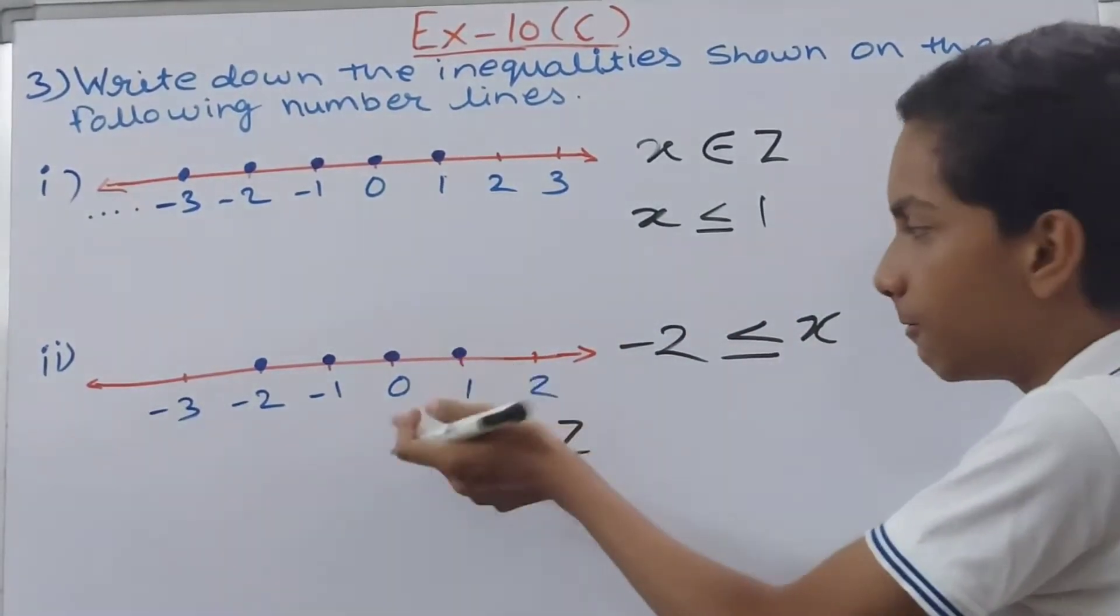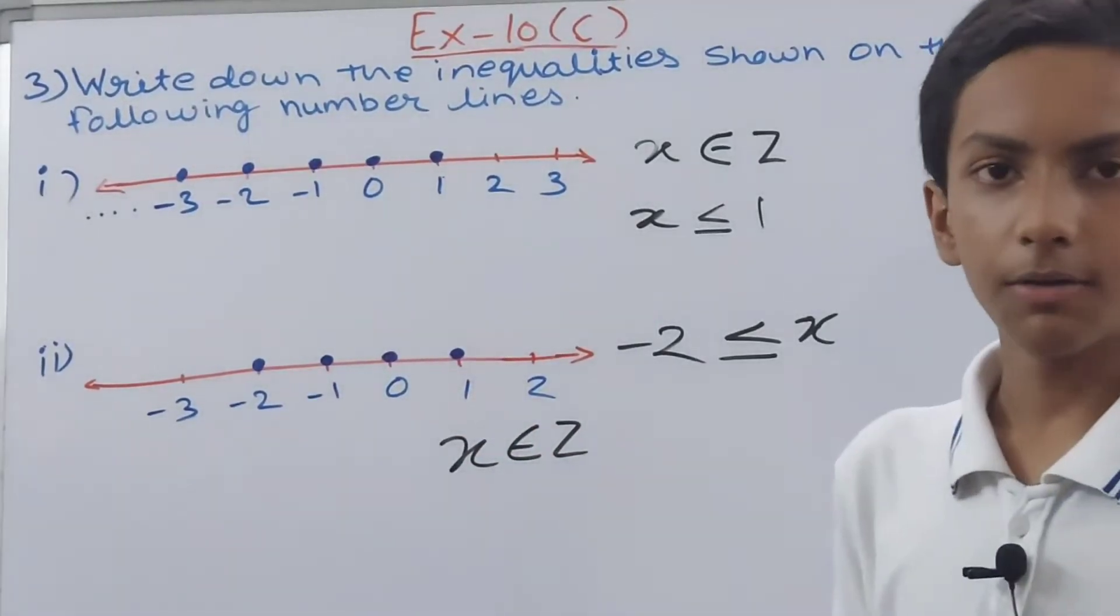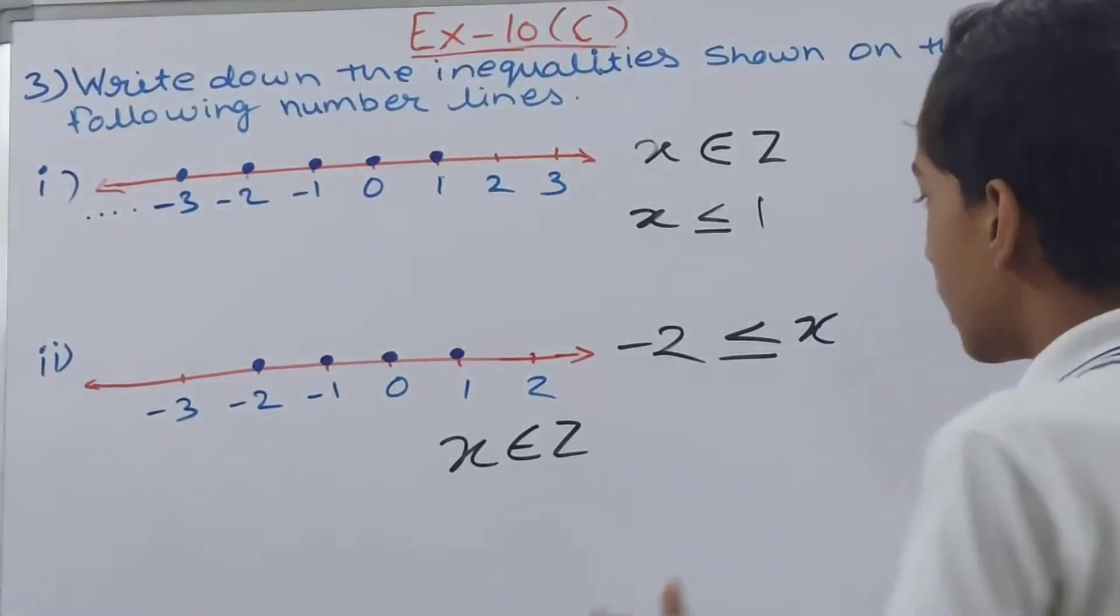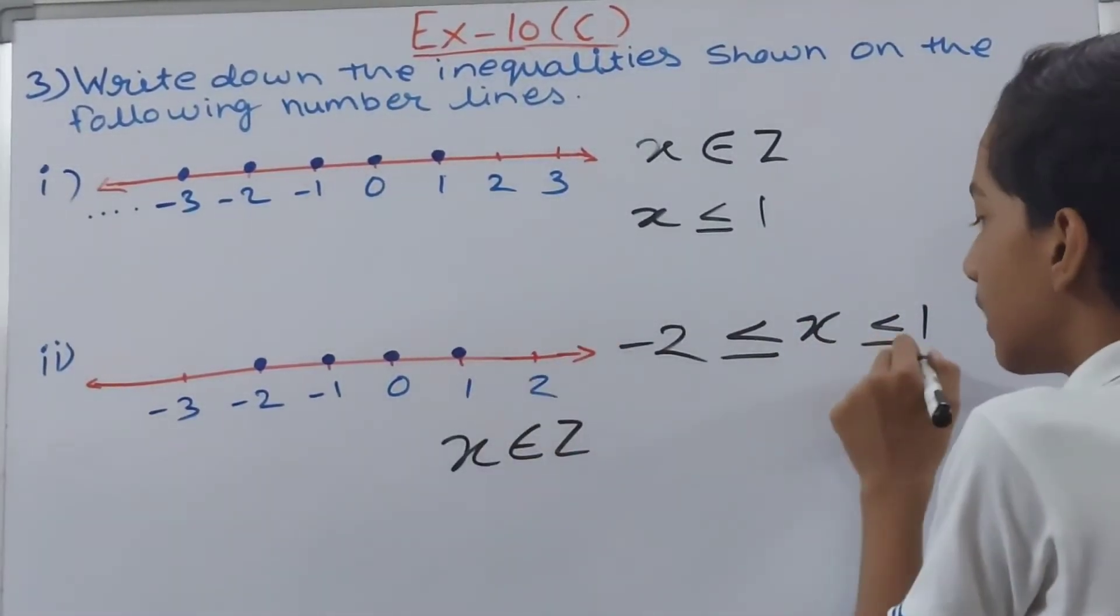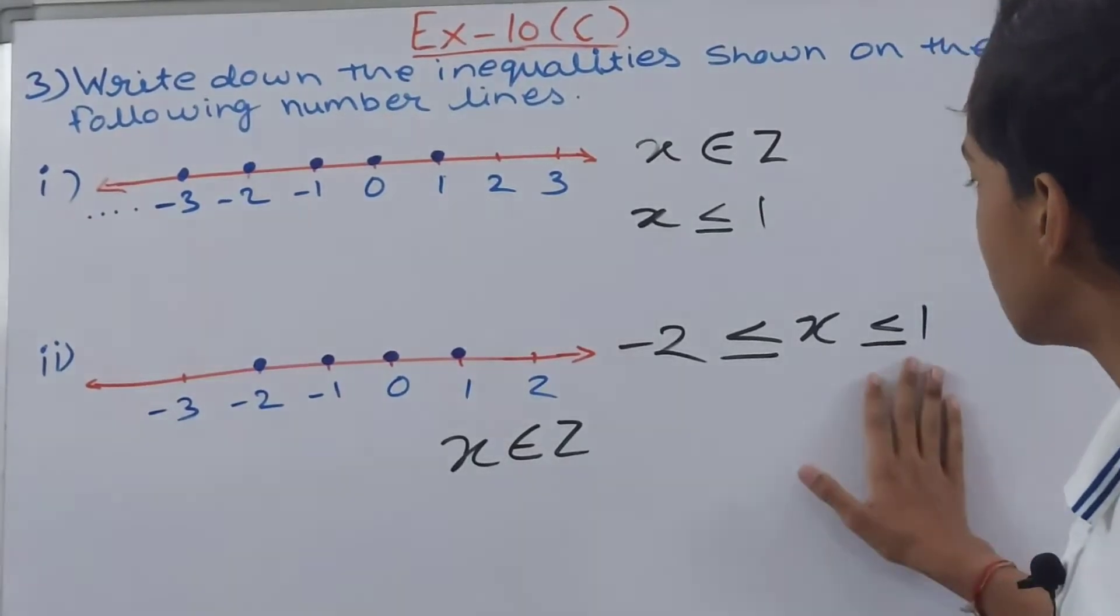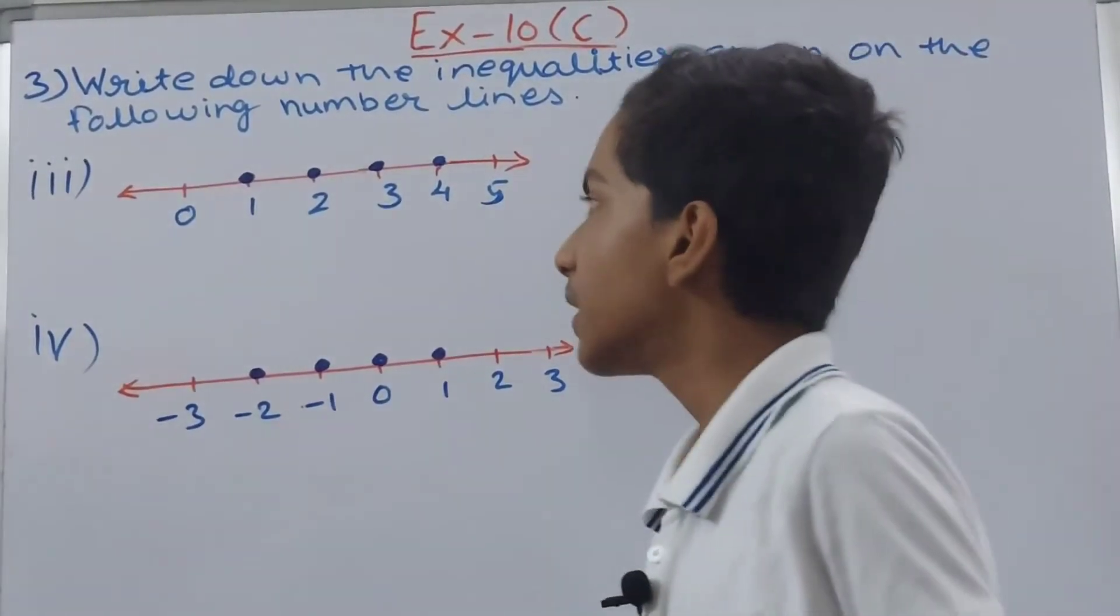And x is less than or equal to 1, why? Because again values here are the values which are having values less than 1. So x is less than or equal to 1 and this one is shaded, so that is why equal to is also mentioned over here.